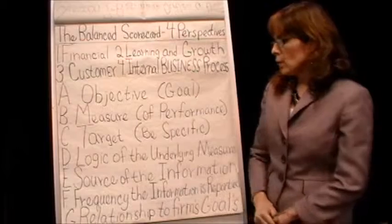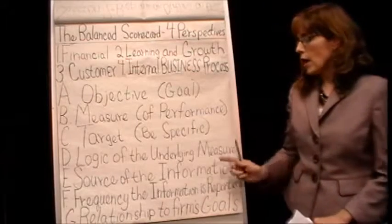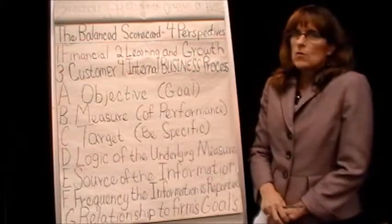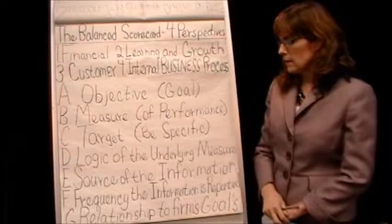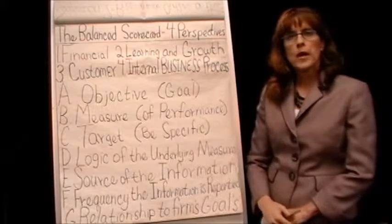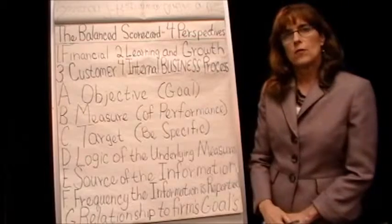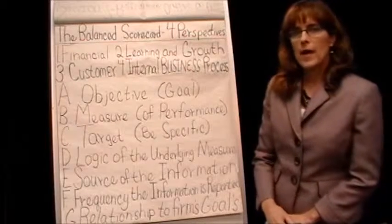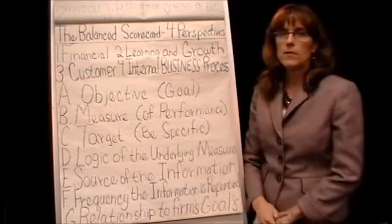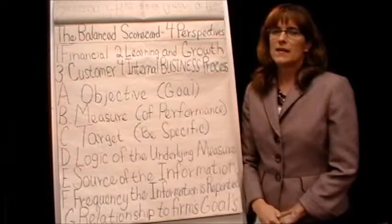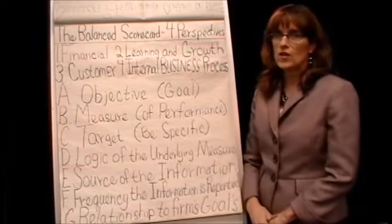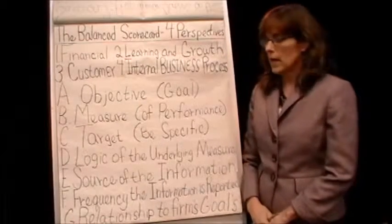When you look at the logic of the underlying measure, why did you pick this — what was the logic behind picking that? Then there's the source of the information: where are you going to get this information from to quantify this? Here's where we get to something that may be interesting. I've looked at literally hundreds of student projects like this and balanced scorecards.